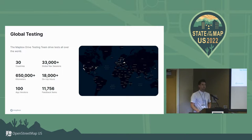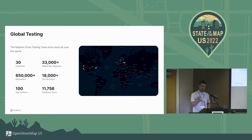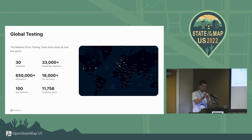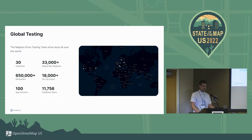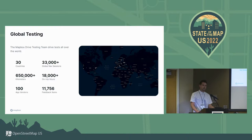Just a quick snapshot of the last two years of what this program has been able to do — and this is separate from all of the different customers using Mapbox navigation as a product. We've tested in 30 countries, well over 33,000 navigation sessions from when you begin a route all the way to the end. Driven over 650,000 kilometers, over 18,000 hours. We've released 100 different versions of the internal testing app and generated 11,756 feedback items. This program is unique and has generated a lot of feedback.